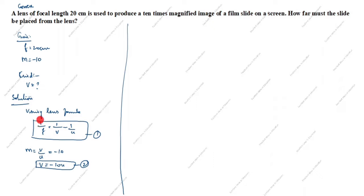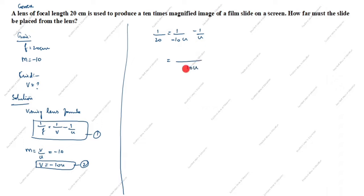Now we apply the lens formula. The value of f is given as 20. The value of v we know is minus 10u, and the value of u we need to find. So 1 by 20 equals 1 by minus 10u minus 1 by u. Taking the common denominator equal to 10u, we get minus 1 over 10u.